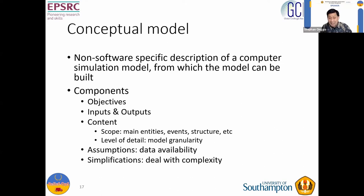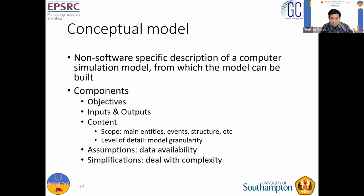Of course we need to specify what assumptions and simplifications we make. Assumptions arise because we don't have the data, so we must record what our assumptions are — because different assumptions may lead to different results, and whoever makes decisions based on the model needs to be aware of them. Simplification is saying this thing is too complex to model, so I try to make it simpler. For example, if in the real world you have 10 different agent types, maybe focus on the 30% of agents who make 70% of decisions and ignore the rest.